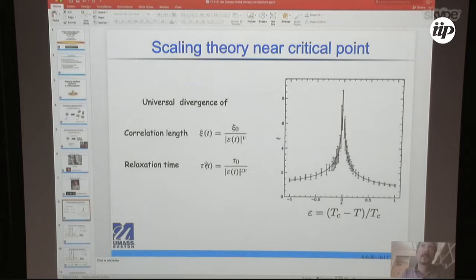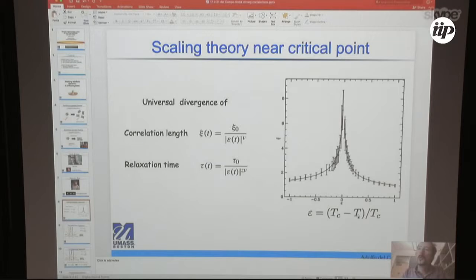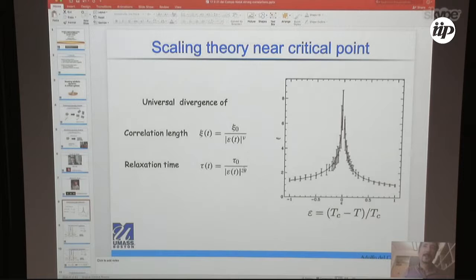The Kibble-Zurek theory is extremely simple. It uses two ingredients common to any second-order or continuous phase transition: the universal divergence of both the correlation length and the relaxation time. As a function of the distance to the critical value, the correlation length diverges as a power law, with the correlation length critical exponent associated with a given universality class. Pretty much the same thing happens to the relaxation time, characterized by exponents ν and z, where z is the dynamic critical exponent.